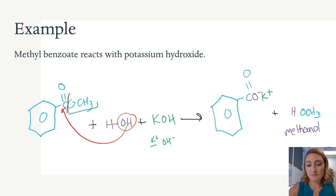And to practice naming this carboxylate salt, this is potassium. And we start with the carboxyl name, so this would have been benzoic acid, becomes benzoate.